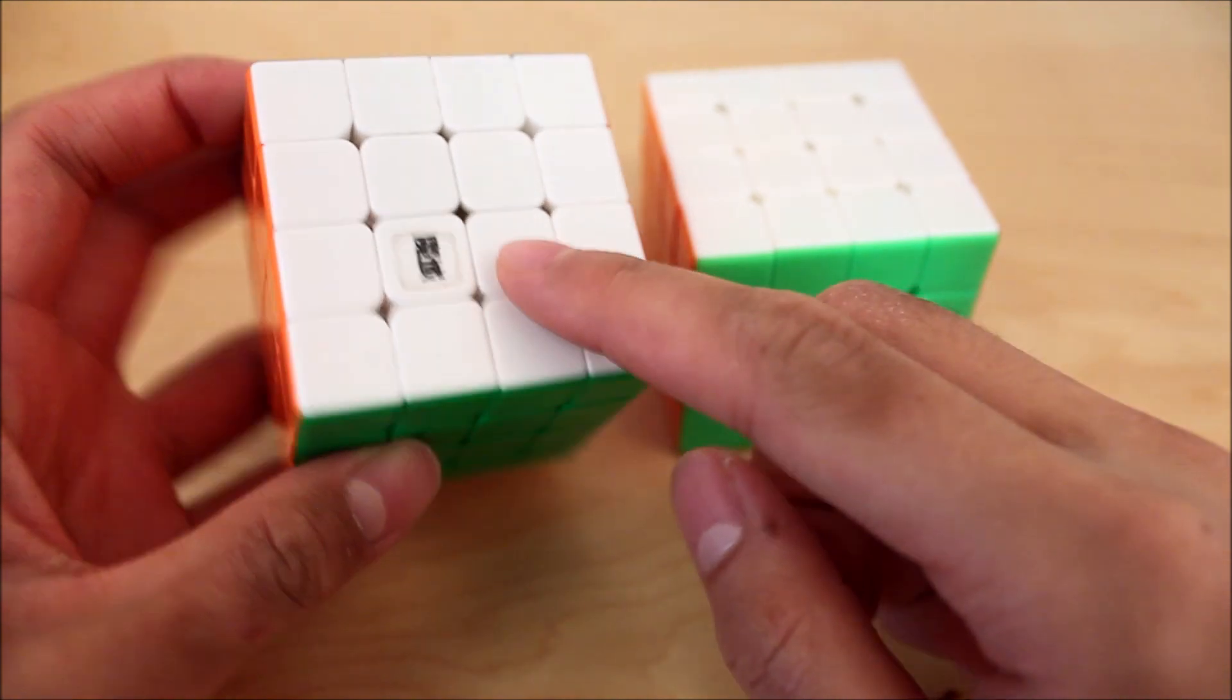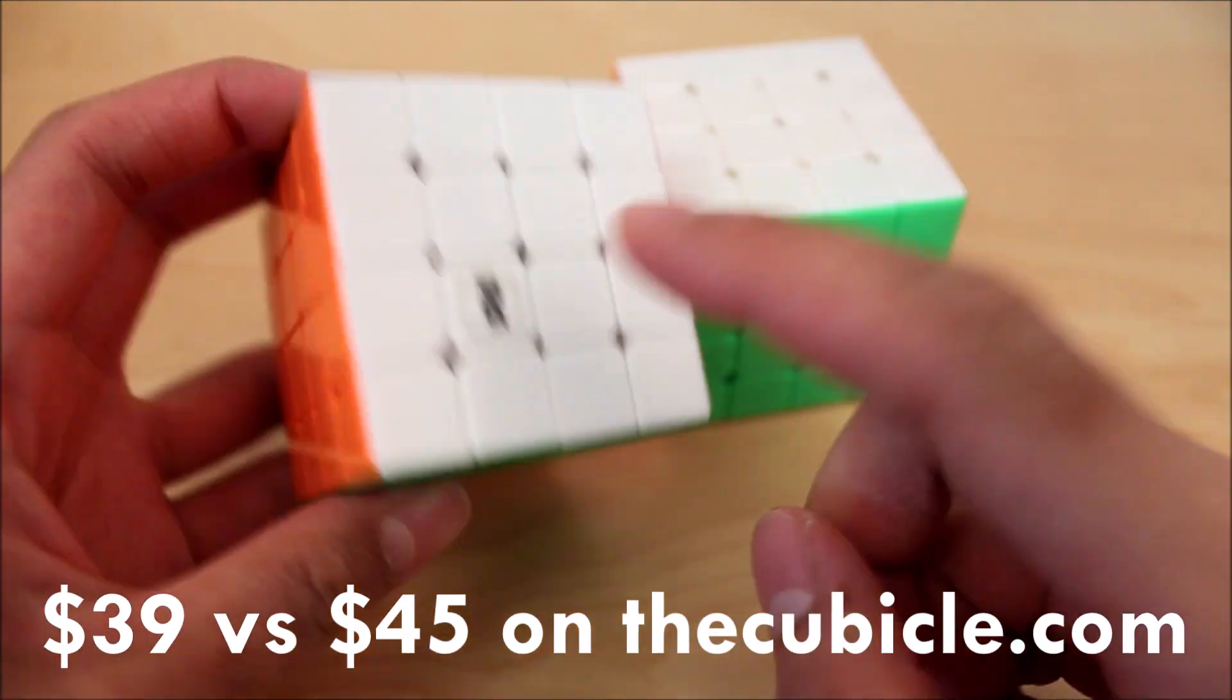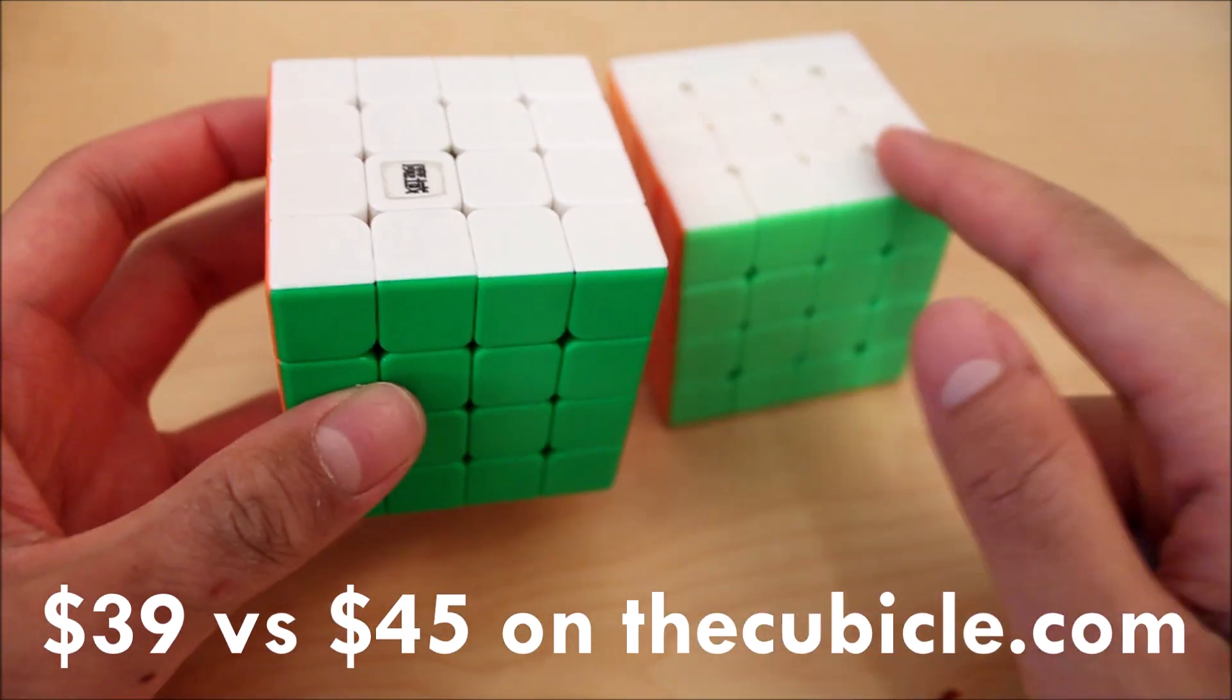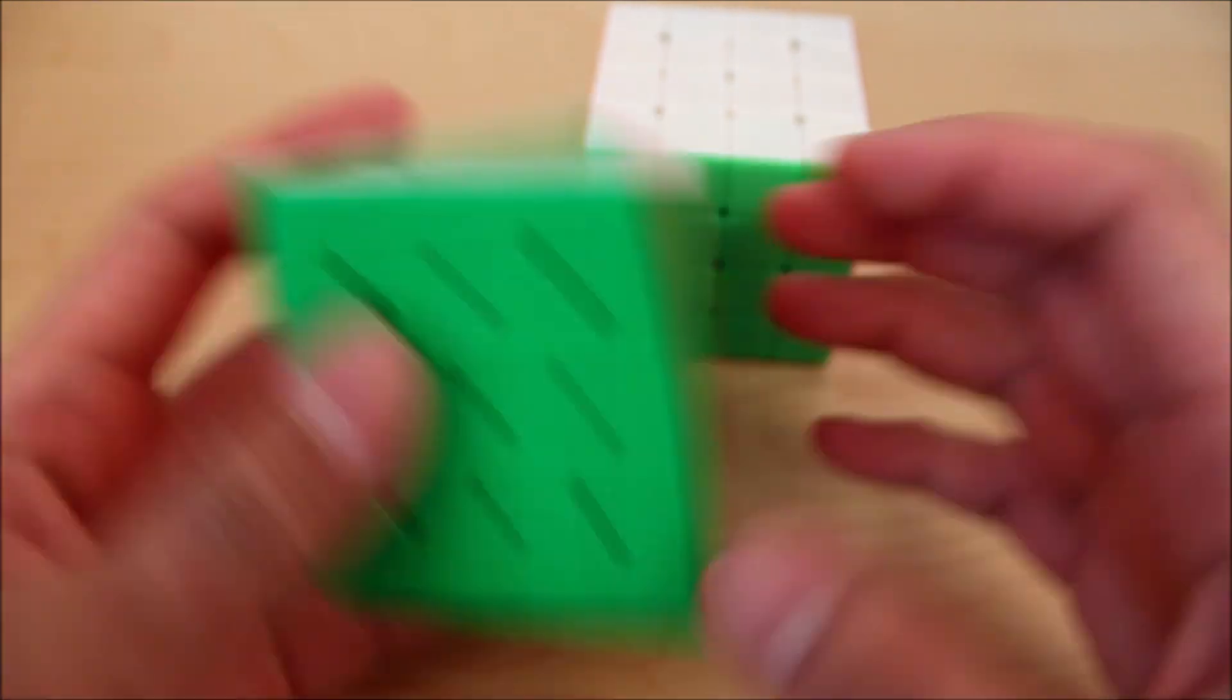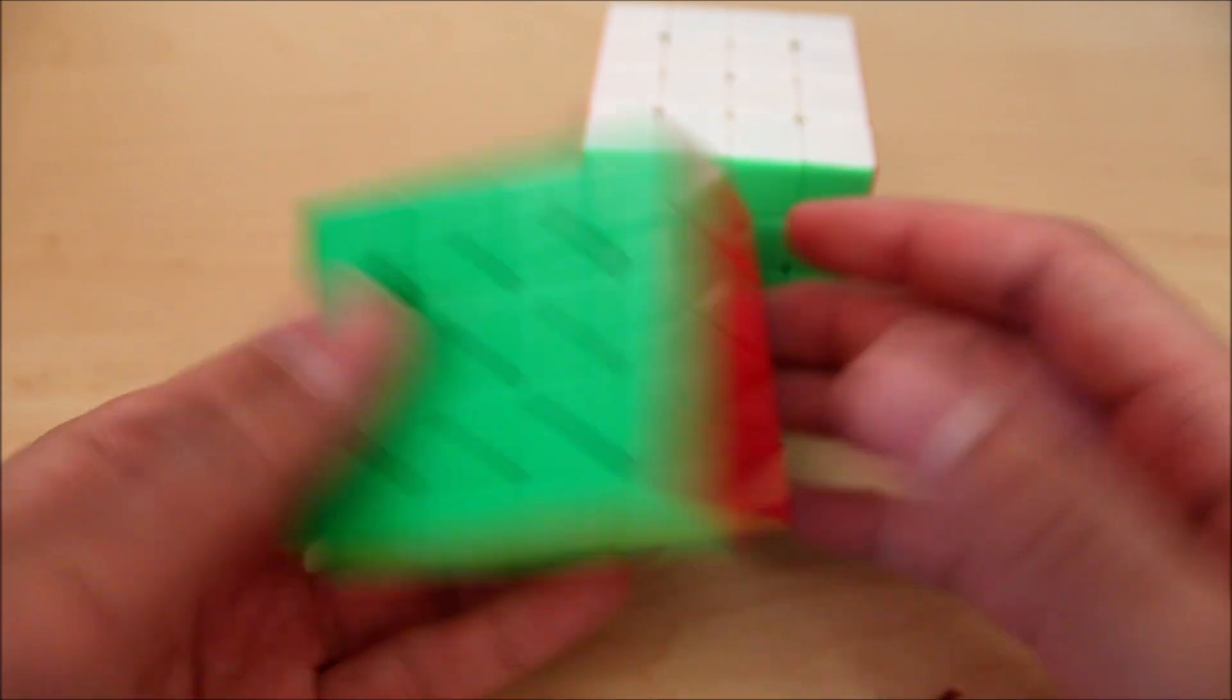Alright, first for price, the WR-M is actually a bit cheaper than this cube. I think this is around $5 less than this one. It's around $40 I think. So, I think it's a pretty good trend that cubes are getting a bit less expensive, so it's more accessible to newer cubers.